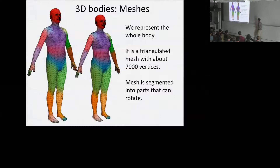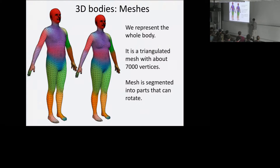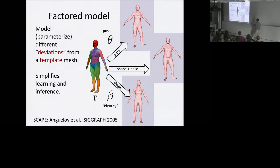For those unfamiliar with graphics and meshes, this is a triangulated mesh with about 7,000 vertices — relatively low dimensional. It's segmented into parts, and each part can rotate in a kinematic chain, where parts rotate relative to their parent part. There are also blend weights, represented by color coding, which I'll explain in a moment.